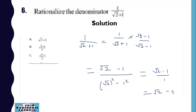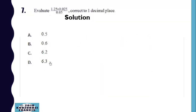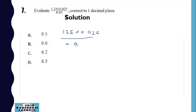Which is root 2 minus 1. Now we want to evaluate it correct to one decimal place. We have several ways — I will multiply until I get whole numbers.